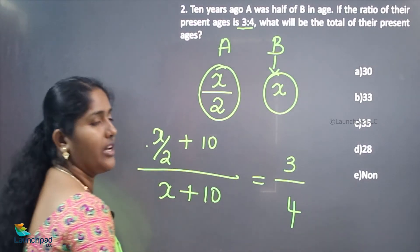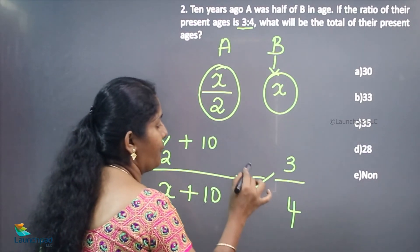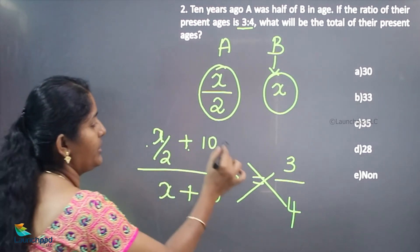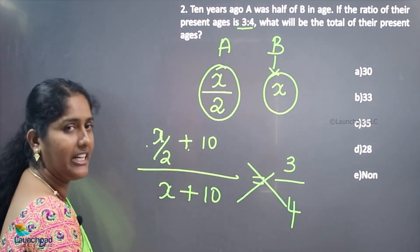At present, the age ratio is 3 to 4. (X/2 + 10) to (X + 10). While doing the cross multiplication, we get 4(X/2 + 10) = 3(X + 10), which gives 2X + 40 = 3X + 30.